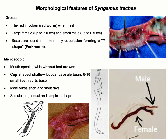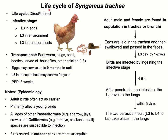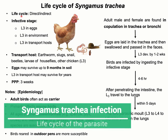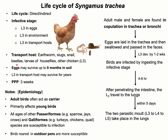Life cycle of Syngamus trachea can be direct or indirect. In the indirect life cycle, there is involvement of transport hosts such as earthworms, snails, slugs, beetles, larvae of different house flies, and even chickens can act as transport hosts. The infective stage can be L3 within the egg, L3 in the environment, or L3 in the transport host.